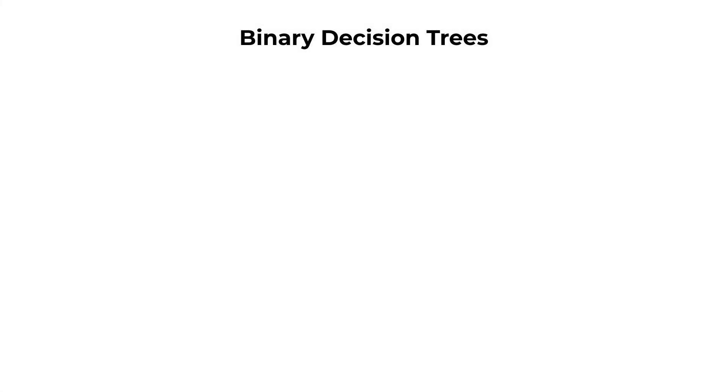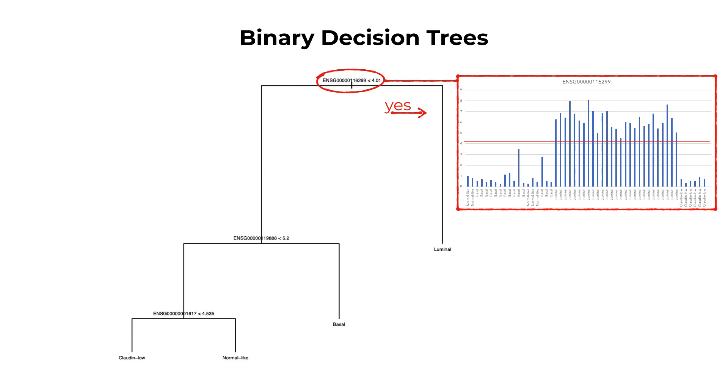One such algorithm is called binary decision trees. Their output looks similar to hierarchical clustering, with each tree created by both thresholds and rules.